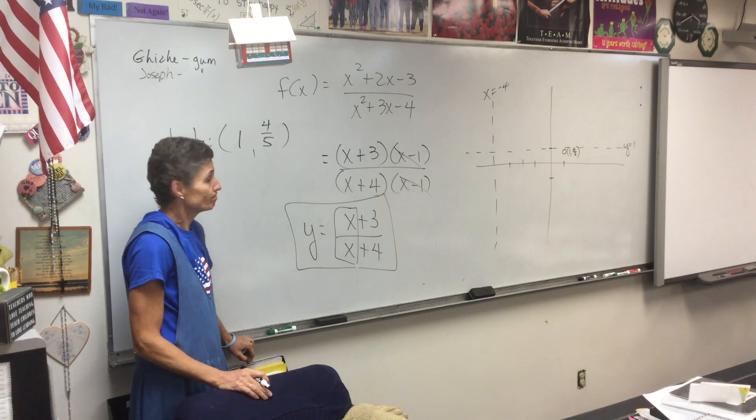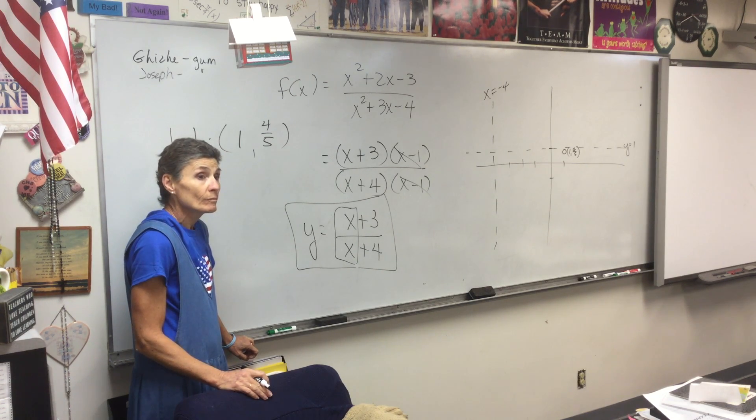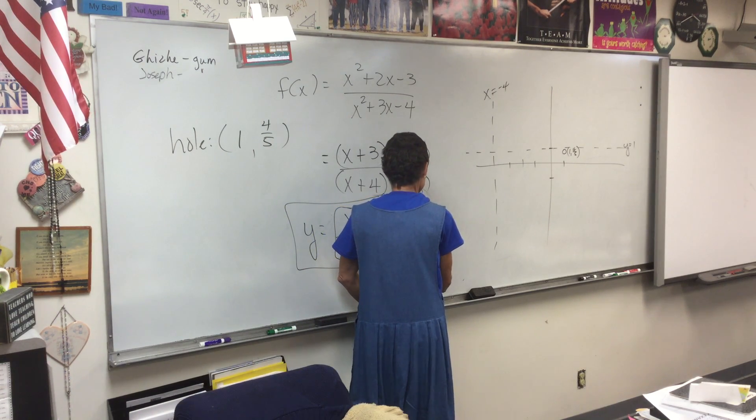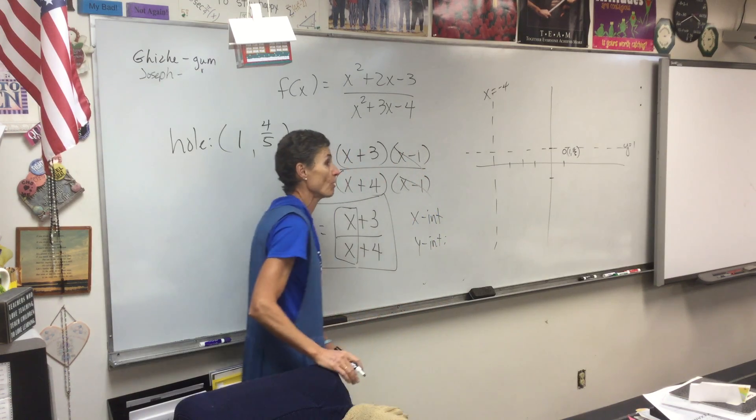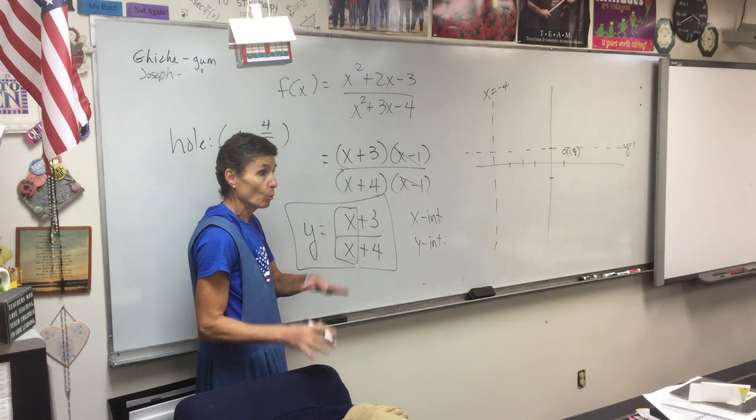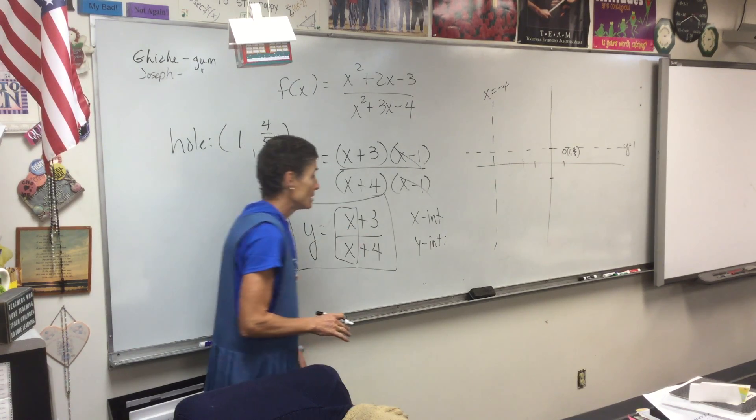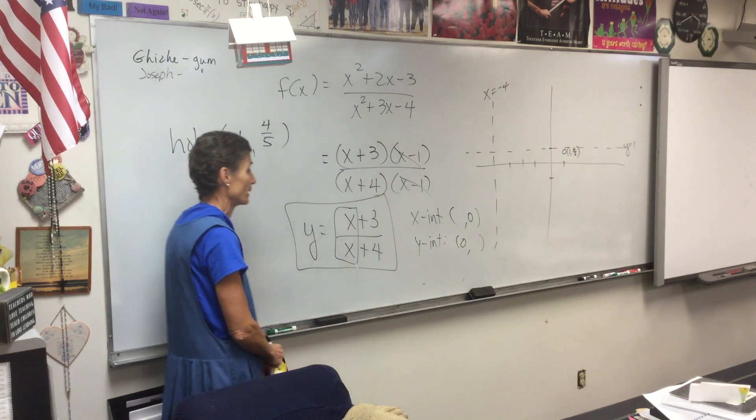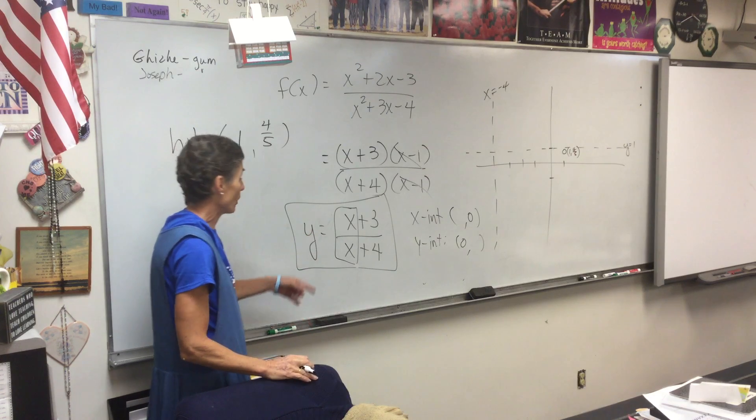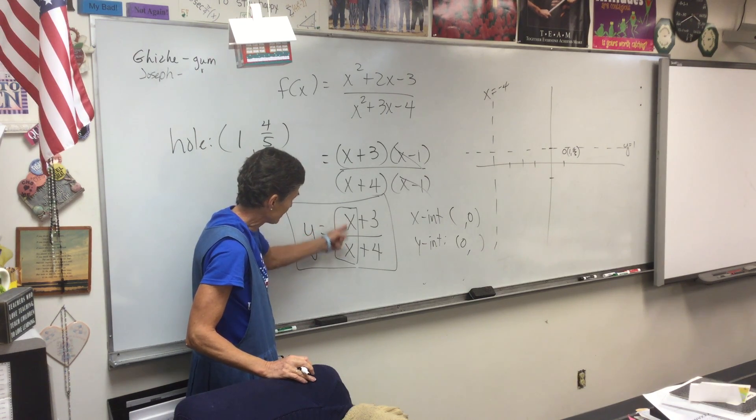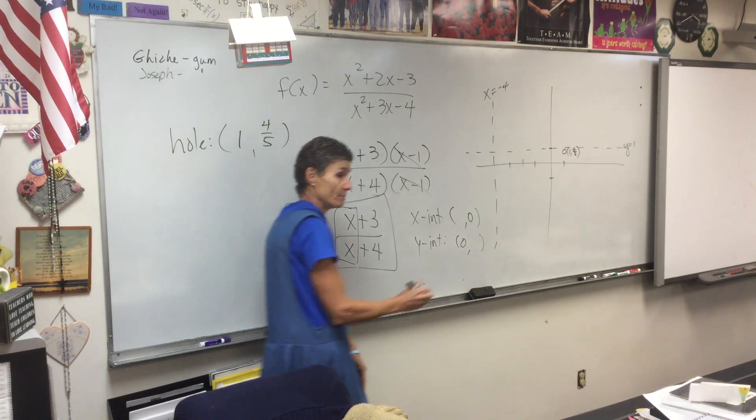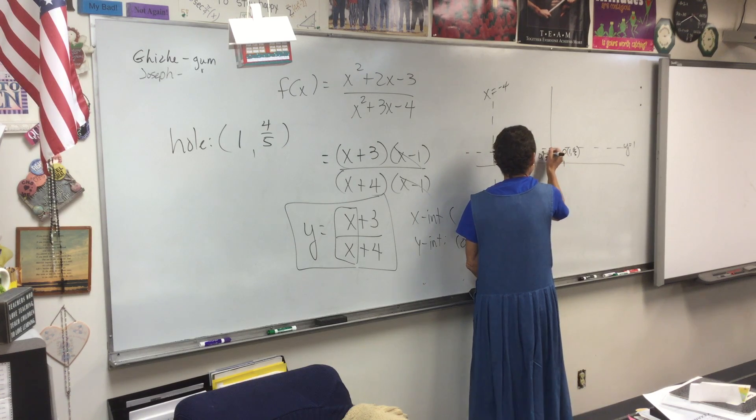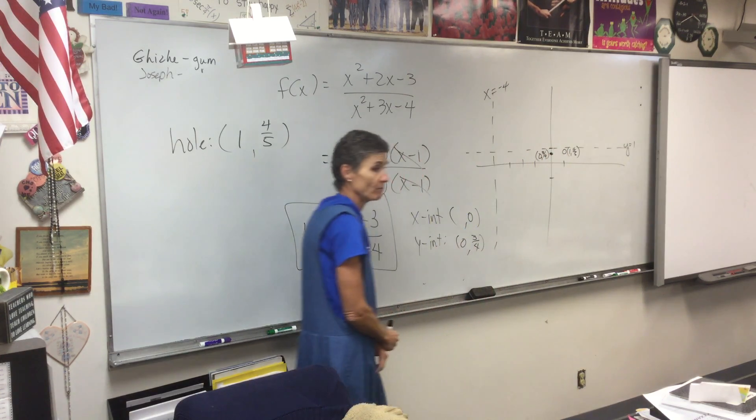What else? X and y intercepts. We need the x intercepts and the y intercepts. Those come from letting each variable one at a time be zero. If we want our x intercept, we're going to let y be zero. If x is zero, then y just turns out to be three-fourths. So I have a y intercept at zero, three-fourths.